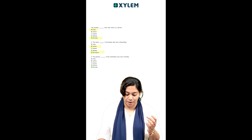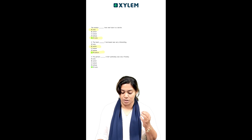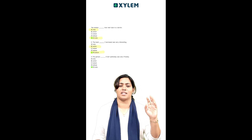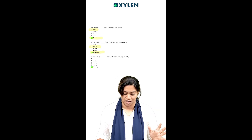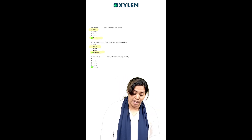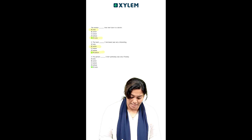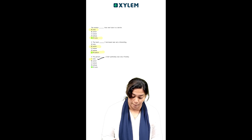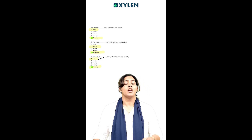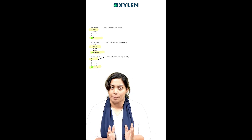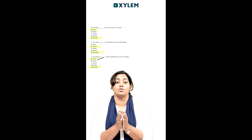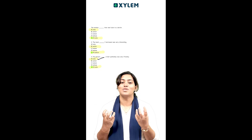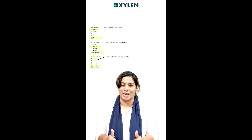The next one: 'The person ___ I met yesterday was very friendly.' Again, it's about a person. So if it is about a person, we can use 'who.' If it is about a material, we can use 'which.'